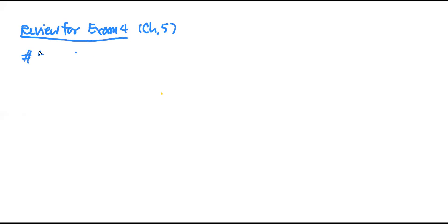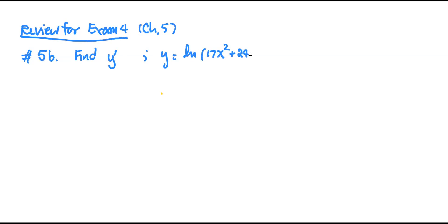Starting with problem 5b, we're going to find the derivative y', where y is in the form of the natural log of 17x squared plus 24x, all divided by 8x to the fourth. The quotient rule is the direct way to handle this problem.